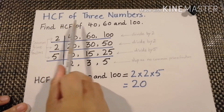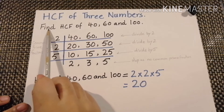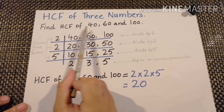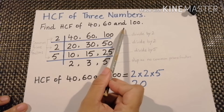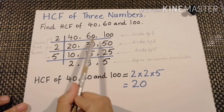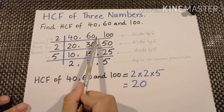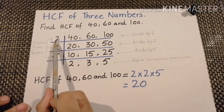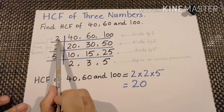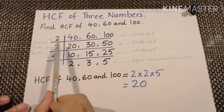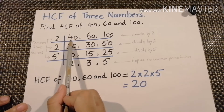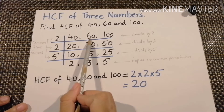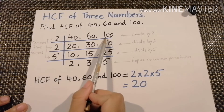Now HCF of 3 numbers. Find the highest common factor of 40, 60, and 100. We will do it by the division method. We will first divide 40, 60, and 100 by the common prime factor 2. 2 times 20 is 40, 2 times 30 is 60, and 2 times 50 is 100.